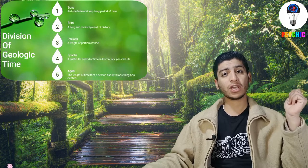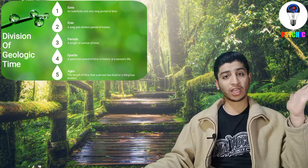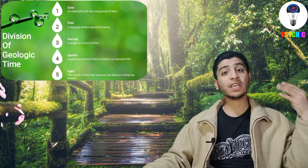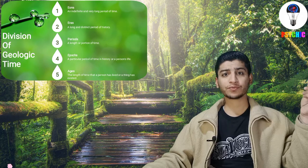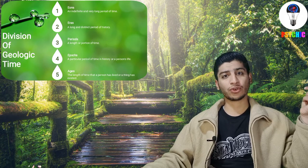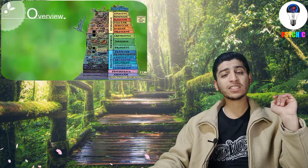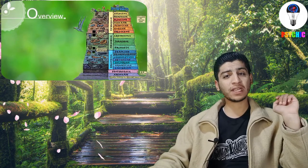There are many types of time divisions and we will talk about eons. An eon is a very long time. The eons in the geologic time scale are Hadean, Archean, Proterozoic, and Phanerozoic. We will now discuss the Hadean eon — it is the time from 4.6 to 4 billion years ago.